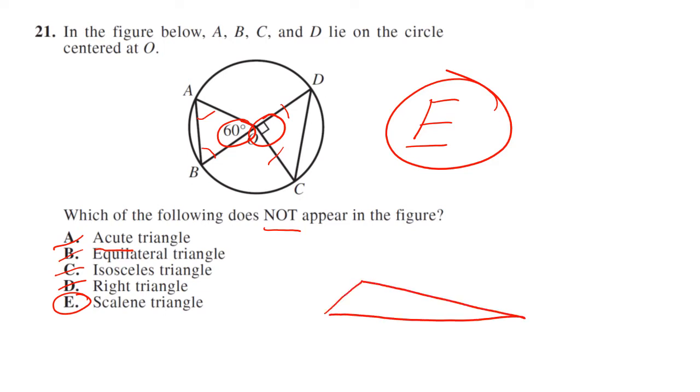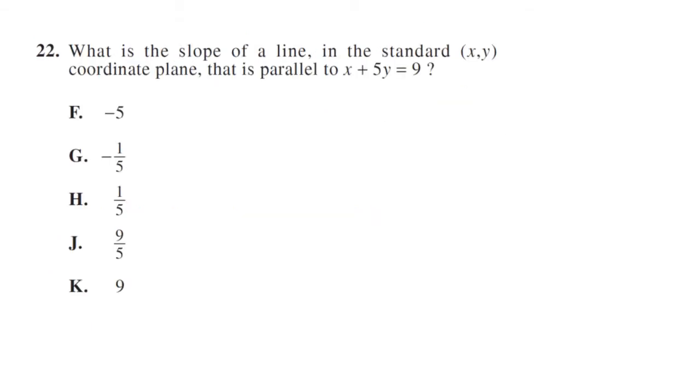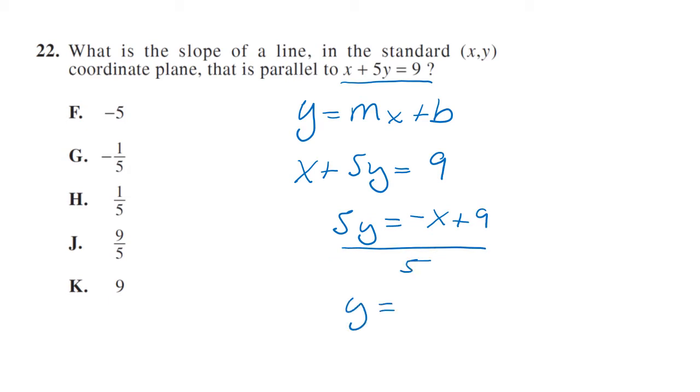What is the slope of the line that is parallel to this? We're gonna put this in y equals mx plus b form. So let's start by saying we have x plus five y equals nine. Subtract our x to the other side and we get five y equals negative x plus nine. Divide both sides by five, y equals negative one-fifth x.